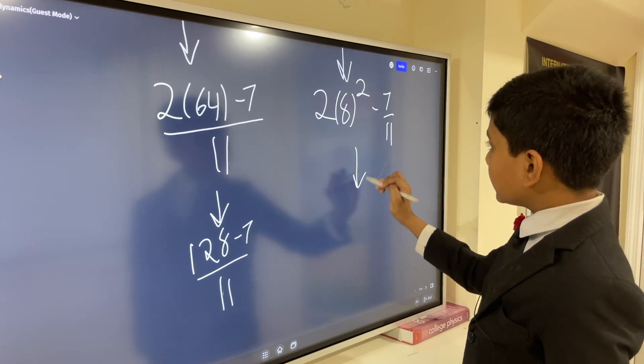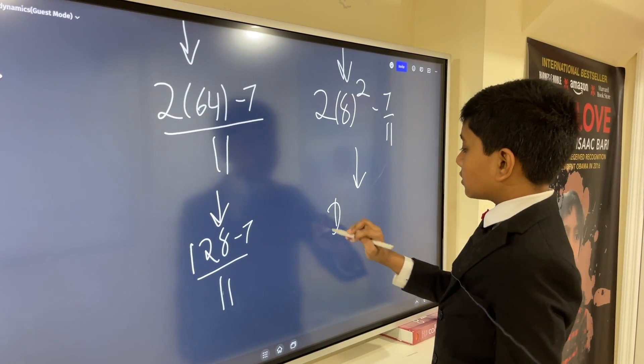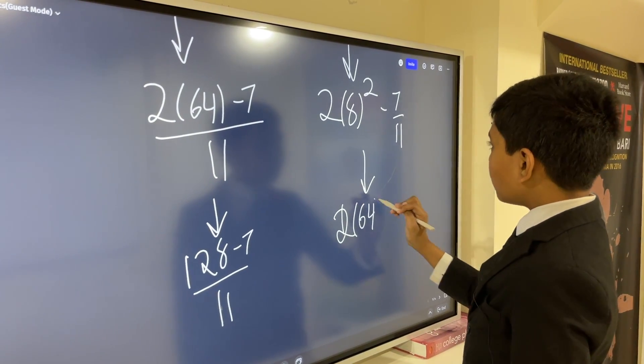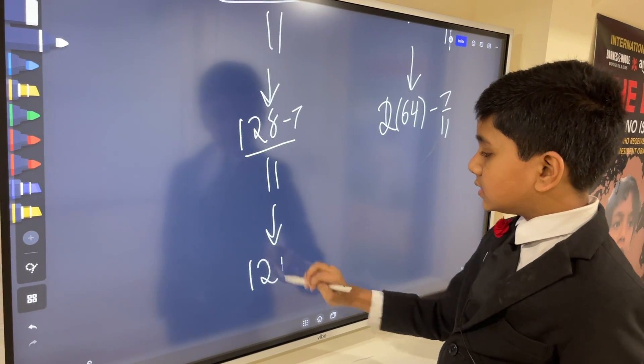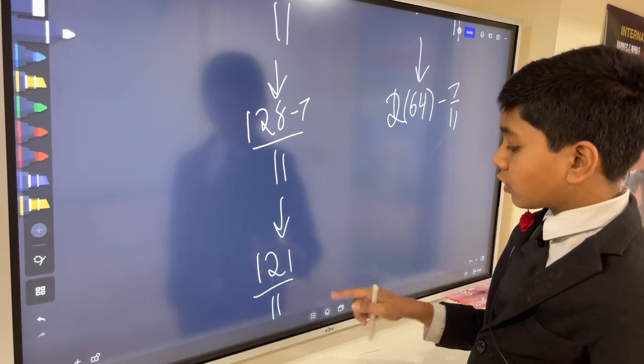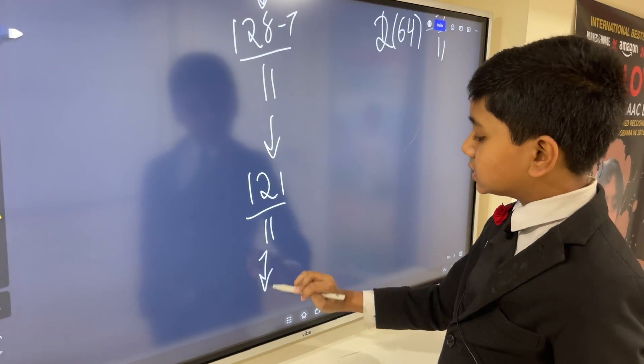And, this guy thinks, oh, eight squared is 64. Now, this guy is like, ah, so, this is just 121 over 11, which is 11.